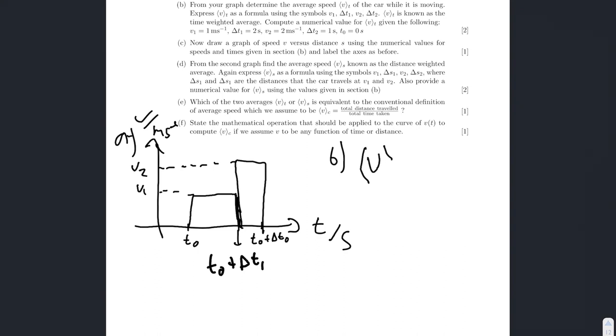Ok, well, we know that the average speed is going to be the total distance over the total time. So, the total distance is v1 delta t1 plus v2 delta t2. Just like the area under these curves. Over the total time, which is just delta t1 plus delta t2.